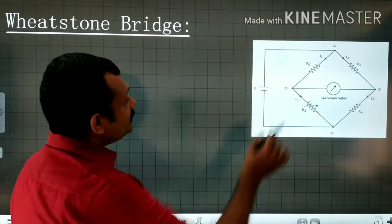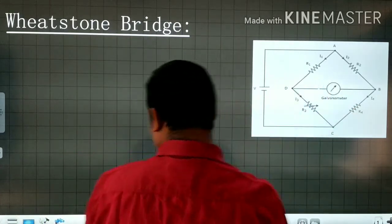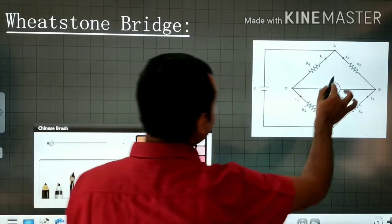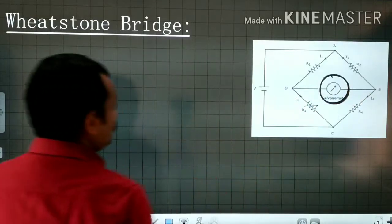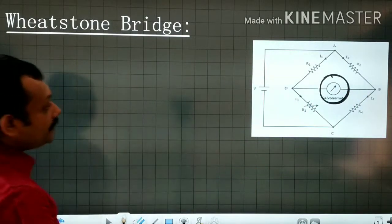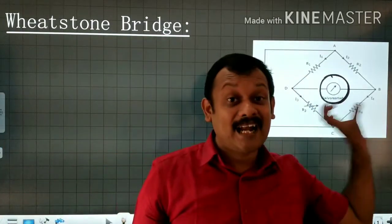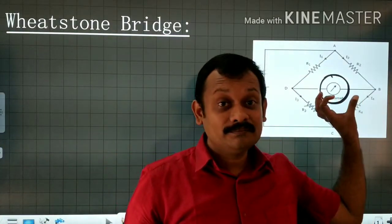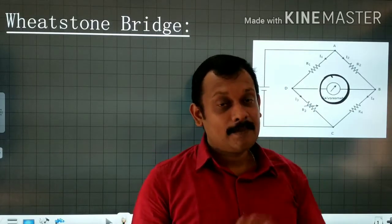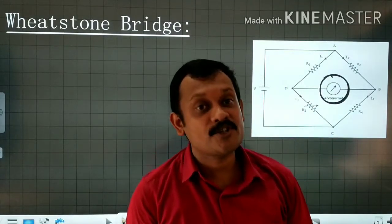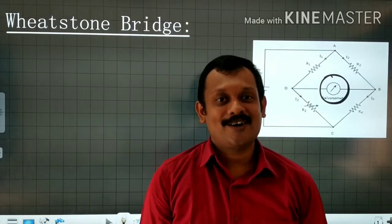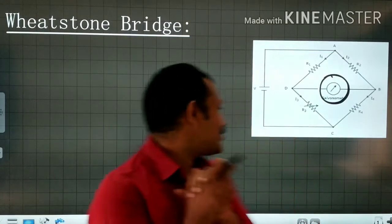This is a galvanometer and the purpose of the galvanometer is to detect the presence of electric current. A galvanometer is used to detect the presence of electric current, and when the bridge is balanced, the galvanometer shows zero deflection. When the bridge is balanced, the galvanometer will show zero deflection. This is what you have to understand regarding a Wheatstone Bridge.